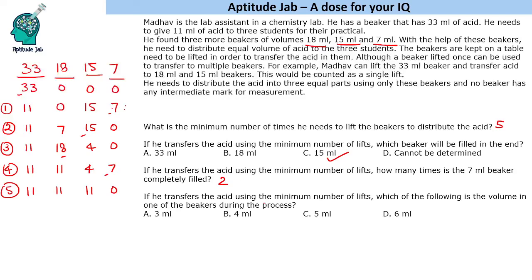If you transfer using the minimum number of lifts, which of the following is the volume in one of the beakers during the process? We see that only 4 ml is the volume in this beaker at intermediate position in the process. That is the solution to the set and answers to the questions.